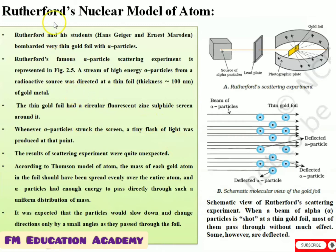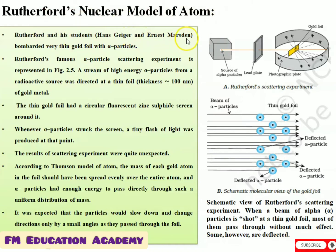Let us now see an important topic: Rutherford's nuclear model of atom. Rutherford and his students Hans Geiger and Ernst Marsden bombarded a very thin gold foil with alpha particles.